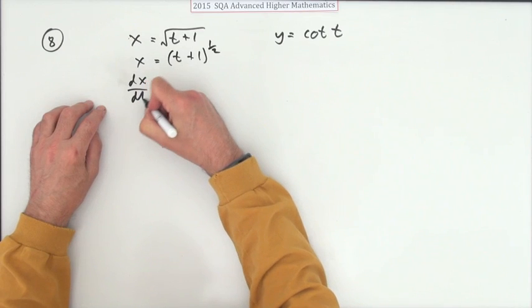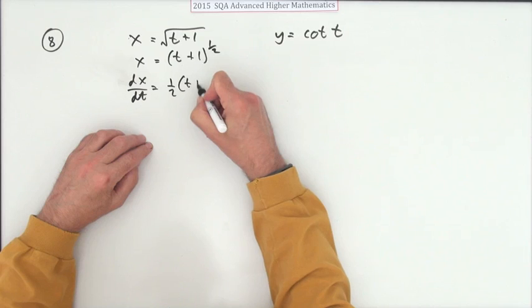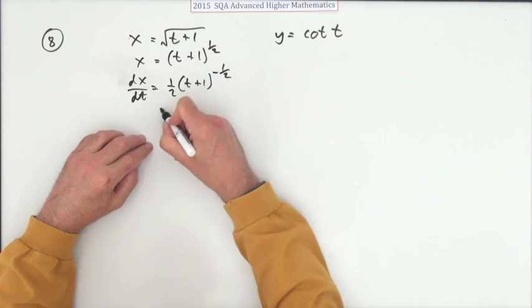So dx by dt would be a half of (t+1) to the power negative a half. I think I'll just write what that means: that's 1 over 2√(t+1).